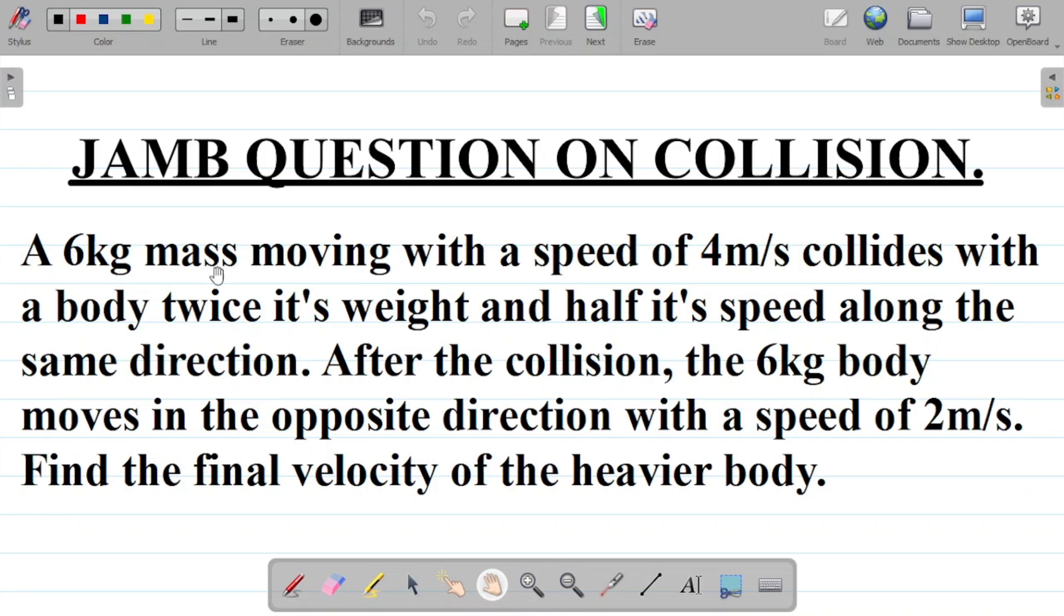Now the question says, a 6 kg mass moving with a speed of 4 m per second collides with a body twice its weight and half its speed along the same direction. After the collision, the 6 kg body moves in the opposite direction with a speed of 2 m per second. Find the final velocity of the heavier body. So that's the question here.